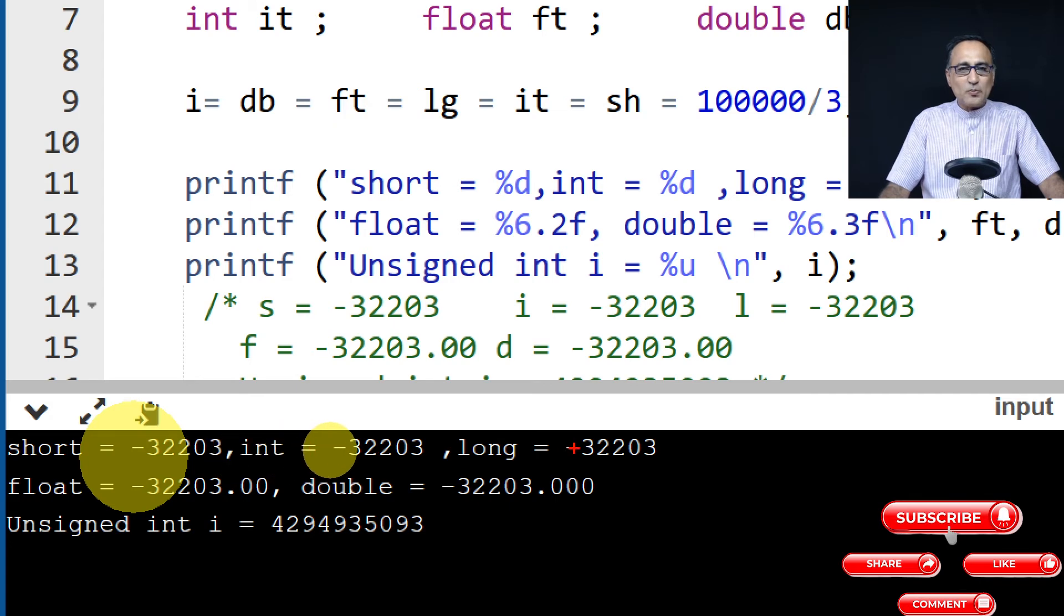The same value has got copied into long, the same from long gets copied into float, then moves into double. Now this negative value, when it is tried to be printed as an unsigned integer,